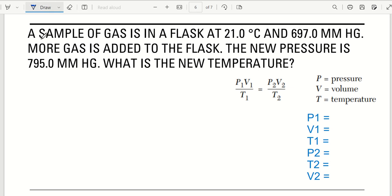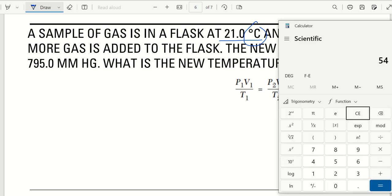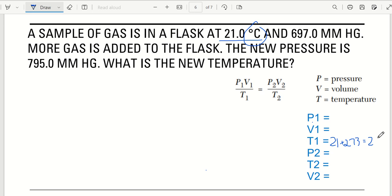A sample of gas is in a flask at 21 degrees Celsius. Is that pressure, volume, or temperature? Temperature, temperature 1, 21, but it's in what? Celsius. And what do we just determined? We have to add 273. So what is 21 plus 273? 294. So 294 is temperature 1. Kelvin.